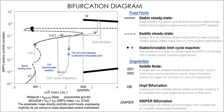Deterministic processes involve a fixed mapping between an initial state and a final state. Starting from an initial condition and moving forward in time, a deterministic process always generates the same trajectory, and no two trajectories cross in state space. Types include: Difference equations — maps, discrete time, continuous state space; Ordinary differential equations — continuous time, continuous state space, no spatial derivatives; Partial differential equations — continuous time, continuous state space, with spatial derivatives; and Logical deterministic cellular automata — discrete time, discrete state space.